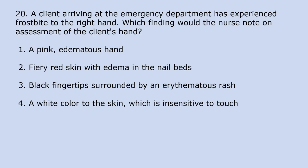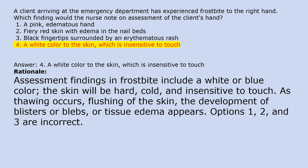A client arriving at the emergency department has experienced frostbite to the right hand. Which finding would the nurse note on assessment? 1. A pink edematous hand. 2. Fiery red skin with edema in the nail bed. 3. Black fingertips surrounded by an erythematous rash. 4. A white color to the skin, which is insensitive to touch. Answer 4. Rationale: Assessment findings in frostbite include a white or blue color; the skin will be hard, cold, and insensitive to touch. As thawing occurs, flushing of the skin and development of blisters or blebs and tissue edema appear. Options 1, 2, and 3 are incorrect.